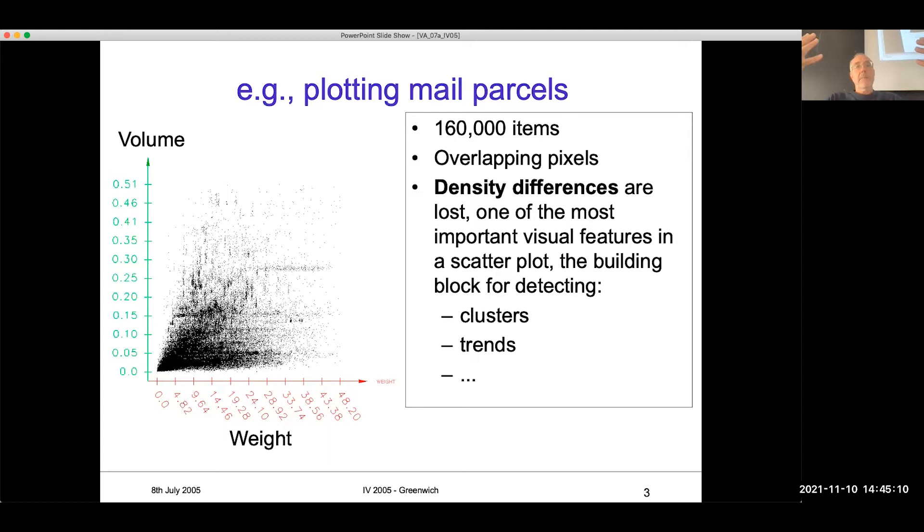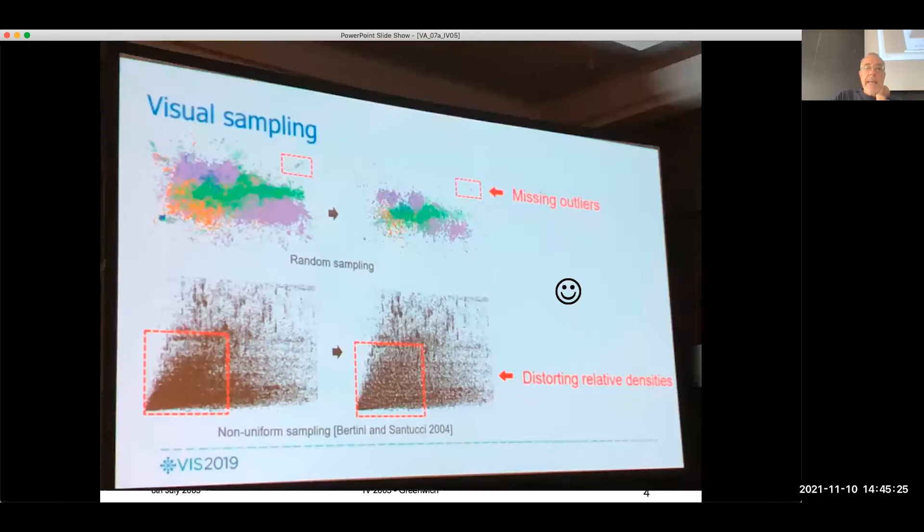One of the things that I can perceive from scatterplot is the density. Sometimes this density produces trends or clusters. In other cases, you want just a different density for some reason.